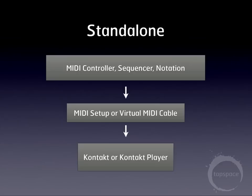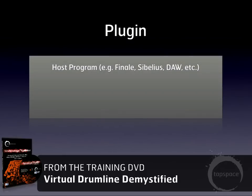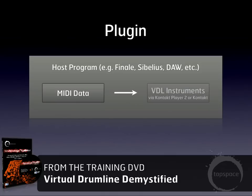Prior to Finale and Sibelius allowing you to run plugins, that was the way you really had to do it. But now you're able to run Kontakt and Kontakt Player 2 as plugins. Basically, the way that works is you'll have some sort of host program. When writing music for a percussion ensemble, marching band, or drumline, you'll most likely use either Finale or Sibelius, but you could also use a digital audio workstation — whether it be Logic, Cubase, Sonar, Pro Tools, or something along those lines. You'll essentially be sending MIDI data inside the program to the plugin, so it's all contained within the host program. The type of plugin might be an Audio Unit on a Mac, a VST, a DXI, or an RTAS, depending on which platform you're working in.